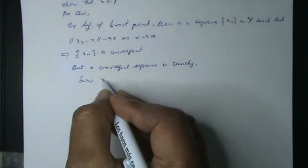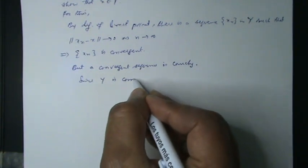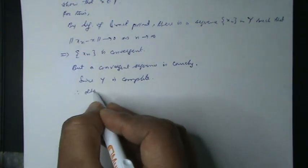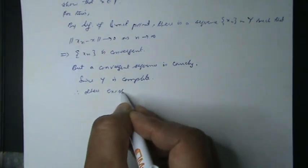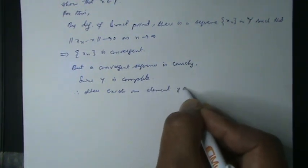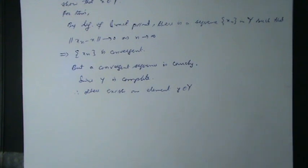Since Y is complete according to our hypothesis, therefore, due to completeness, there exists an element y in subspace Y such that